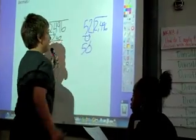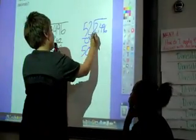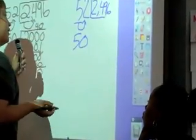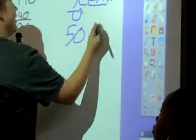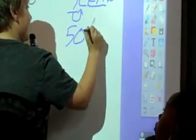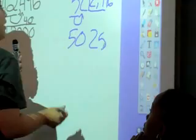The way you can estimate this problem is to use compatible numbers. First, what we would do is round the divisor, and if you look at the 5 and the 2, you get 50.